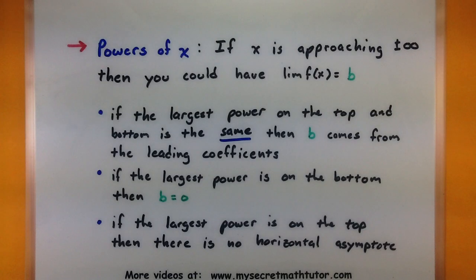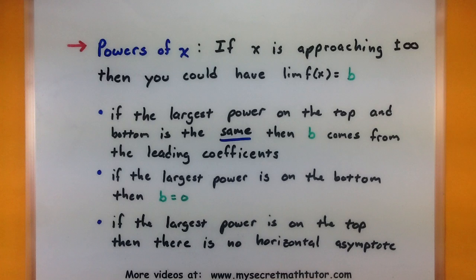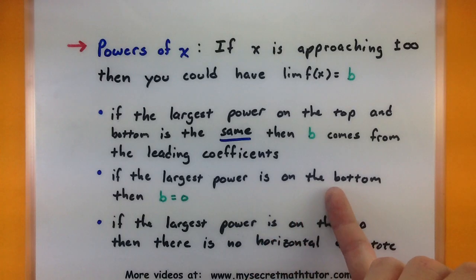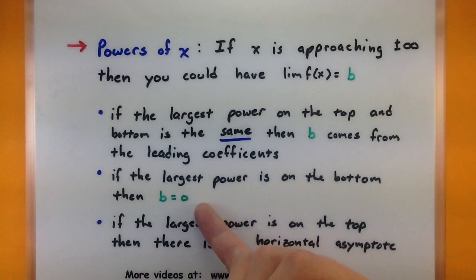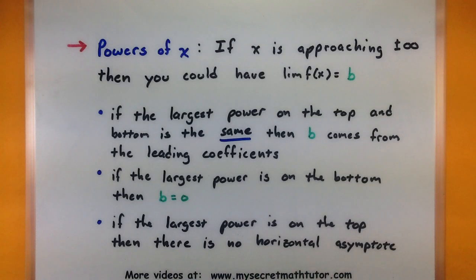Now let's look at the other type of limit — ones where x is approaching infinity. For those, you really want to key in on the larger powers of x. If the largest power on top and bottom are the same, the limit comes from the leading coefficients. If the largest power is on the bottom, the limit is zero. If the largest power is on the top, the function goes towards infinity or negative infinity and doesn't approach a single value.